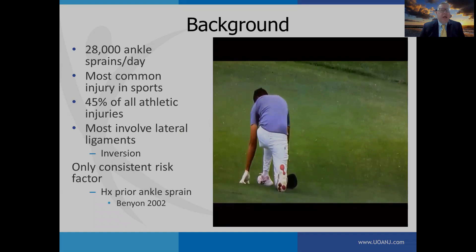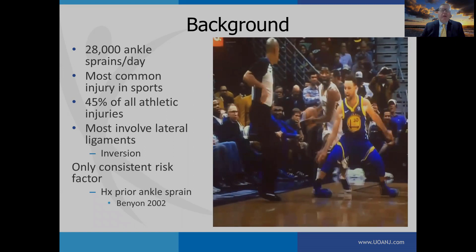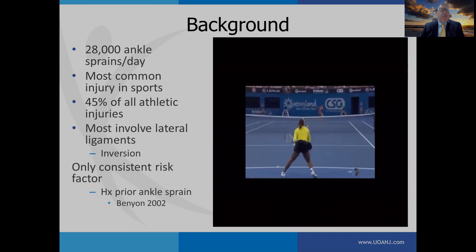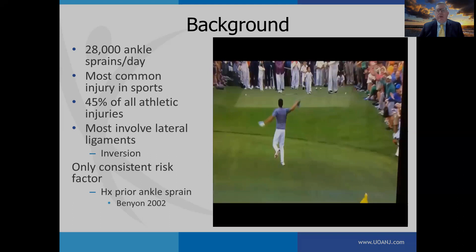In the United States, there are over 28,000 ankle sprains reported each day, and it's considered the most common injury in sports, with 45% of all athletic injuries occurring to the ankle. Most involve the lateral ligaments with a mechanism of inversion, and the only consistent risk factor that's been identified is a prior history of ankle sprain.